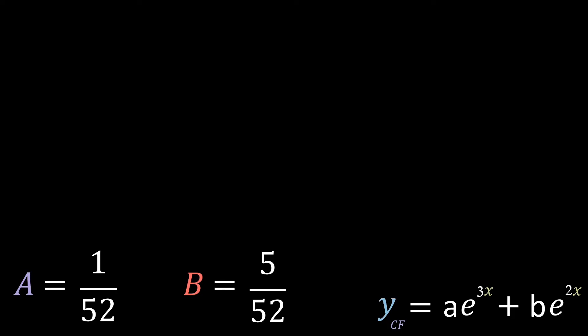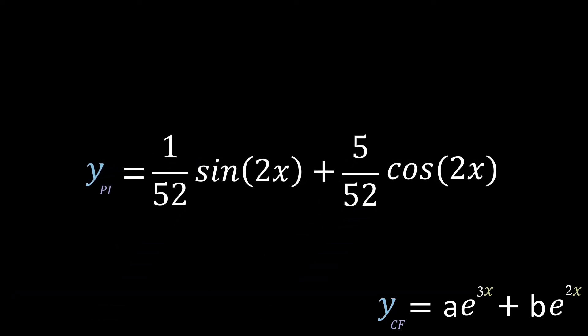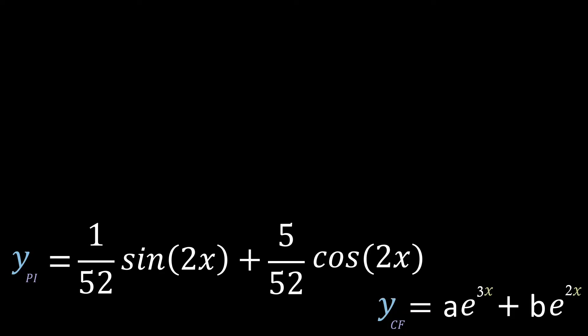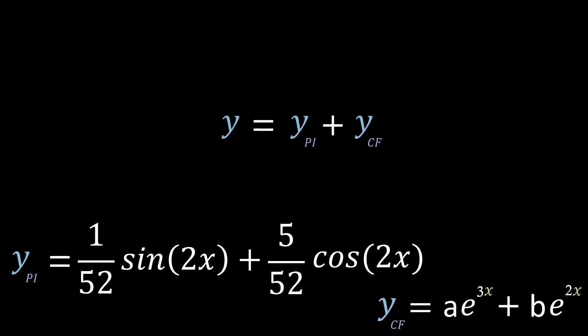Now if we bring back our original solution that we were trying, we can substitute these values of a and b back into this. Then as we did before, as we now have two solutions for y, ypi and ycf, to find the general solution of y, we need to add these two together.